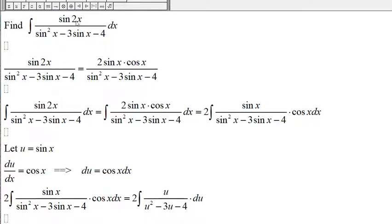Here we have the integral sine of 2x divided by sine squared of x minus 3 sine of x minus 4.